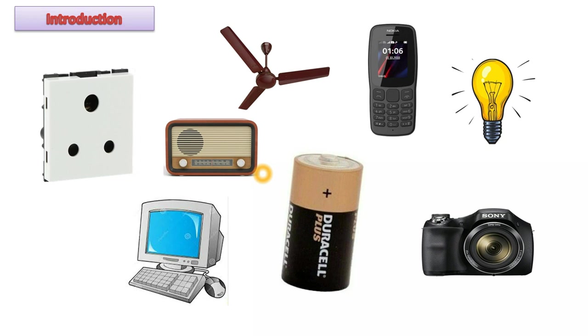A battery acts as a source of electricity. In this lesson we are going to talk about the chemical changes or reactions which take place when electric current is passed. Before we get into that topic, let's start with the basics: what is electric current, how it passes through objects, and whether it can pass through all objects. Then we will understand the chemical changes.